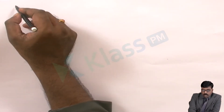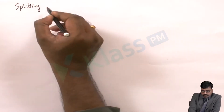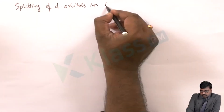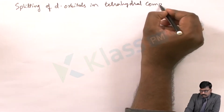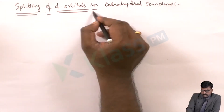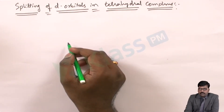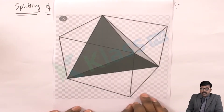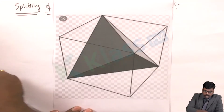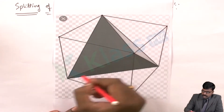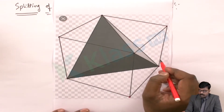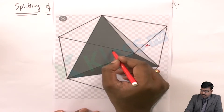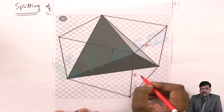Before going into the splitting of octahedral, let us see the splitting of d orbitals in tetrahedral complexes. Before understanding how the splitting has been done, let us see the structure of tetrahedral. This is the tetrahedral structure — you can see this is a cube. The corners of the cube are arranged and you can consider one axis as x-axis, one as y-axis, and one as z-axis.